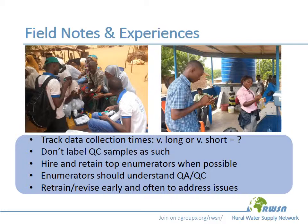Based on our experience, we found that it can be very useful to track data collection times. If a survey is supposed to take 10 or 15 minutes and you see that some enumerators are completing it in one or two minutes or one or two hours, that may flag a possible problem, and you can follow up to see what's going on. Generally, if QC samples such as blanks and duplicates are labeled just like every other sample, that can improve their ability to accurately detect whether problems are occurring. We find that it's incredibly valuable to hire and retain top enumerators as they can pass on institutional knowledge to new recruits, and it's helpful if enumerators understand how the QAQC process works so that they can help make sure that it's working smoothly.